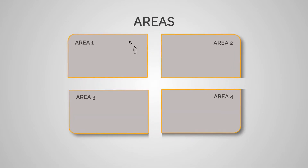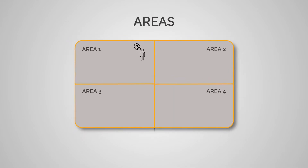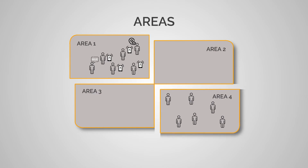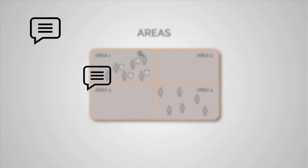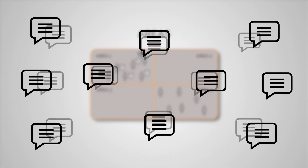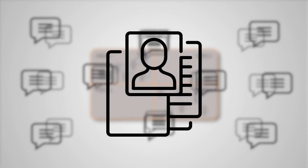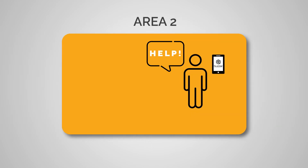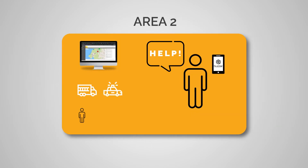Residents will always receive alerts for their saved area. Residents in area A do not always need to know what's happening in area B unless it is something that may affect them. This limits the amount of messages around a certain incident and only provides the necessary information. When the user moves to a completely different area and calls for help, that area's monitor, responders and residents within a certain radius will receive the alert and can go help.